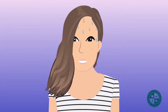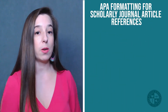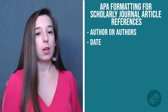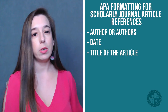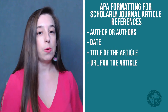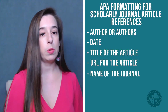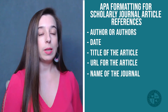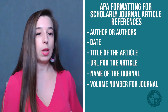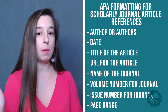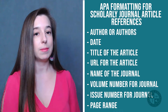There are a few more elements involved when referencing scholarly journal articles than website articles. You still need your author or authors, a date, the title of the article, and a URL or link. In addition, you need the journal name, the volume number, the issue number, and the page range from what page to what page the article was published.